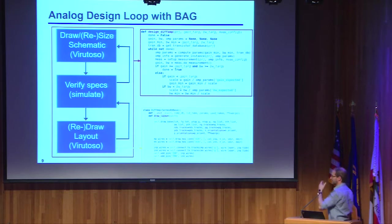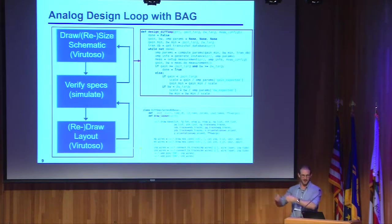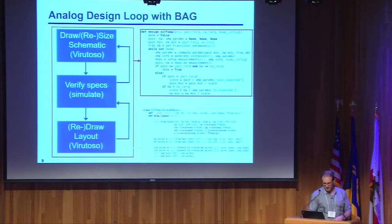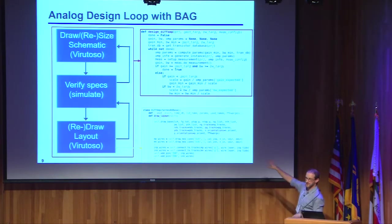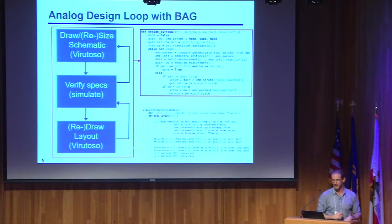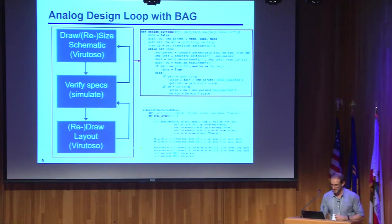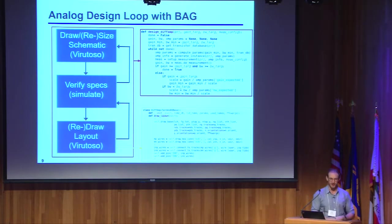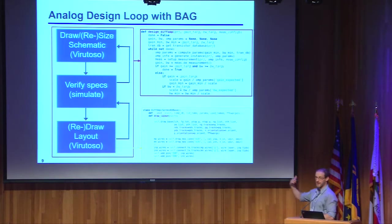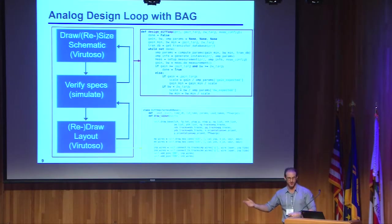BAG is really just a bunch of plumbing that lets you write as code the steps you yourself were already taking as a human to do the design. To give clarity of what I mean: in this core analog design loop, when you go and draw the layout, instead of a human doing it, the human writes a piece of code that takes in all the parameters for this particular layout, writes up how you would connect things together, and connects that up into the rest of the system. Similarly, if you have an approach to sizing transistors, choosing topologies, or deciding how many devices you need, you write code capturing how you make those decisions — what simulations to run, what to extract, and so on.